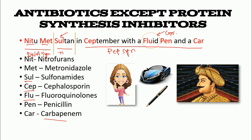So you can see that except for fluoroquinolones, all the rest — CEP, PEN, and CAR — are peptidoglycan synthesis inhibitors. To summarize: the first two are DNA synthesis inhibitors, the second part links to thymidine synthesis, and the rest are peptidoglycan inhibitors except fluoroquinolones. That's how easily you can remember: 'Neetu met Sultan in September with a fluid pen and a CAR.'